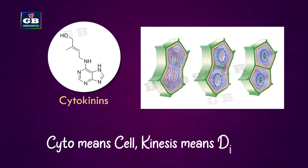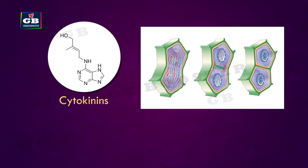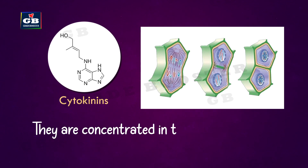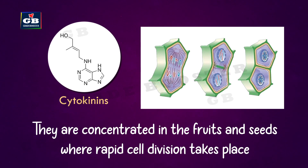Cytokinins. 'Cyto' means cell and 'kinesis' means division. This means cytokinins promote cell division. They are concentrated in the fruits and seeds where rapid cell division takes place.